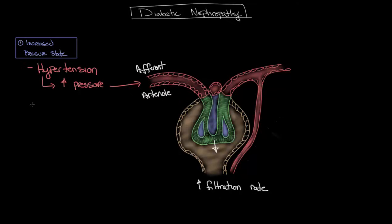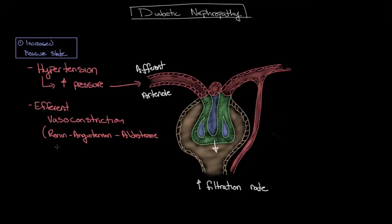The other mechanism contributing to this high pressure state is vasoconstriction of the efferent arteriole — meaning this blood vessel constricts or gets smaller in diameter. To understand why this occurs, we need to briefly review the renin-angiotensin-aldosterone system, or RAAS. Renin is a hormone secreted by the kidneys in response to decreased renal perfusion or low blood flow to the kidney, which is a sign of low fluid volume throughout the body. In response to low fluid volume, renin has a cascade of effects to maintain blood pressure and volume status, one of which is constriction of the efferent arteriole, maintaining pressure within the glomerulus in the presence of decreased renal perfusion.